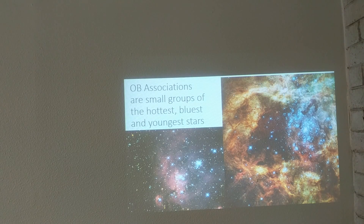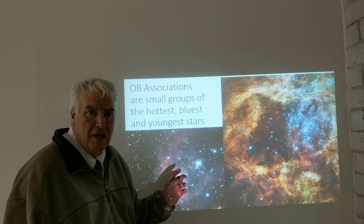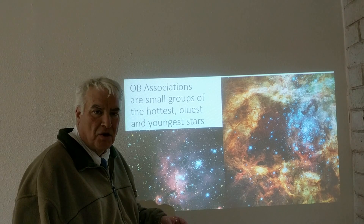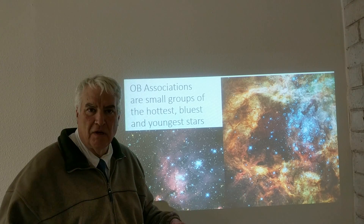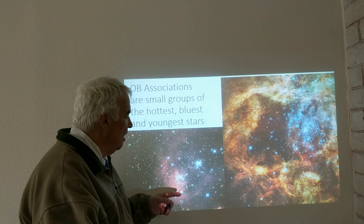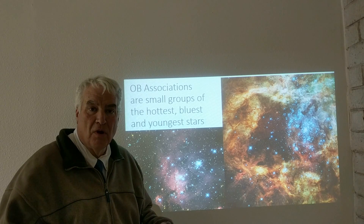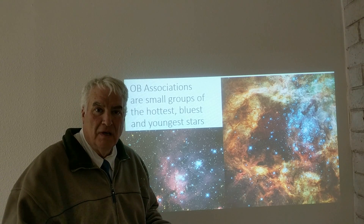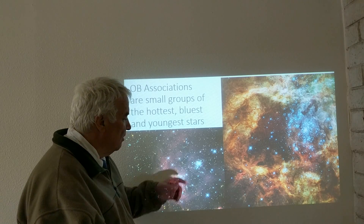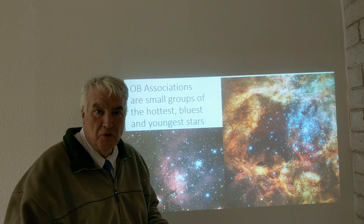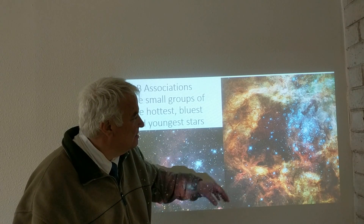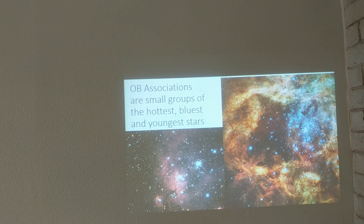OB associations are small groups of the hottest, bluest, and youngest stars, very often associated with gas clouds. These do not remain together in a cluster very long — they separate out, and in fact don't last very long because these stars have very short lives. Before they can become an old cluster, it becomes an extinct cluster, as the bright O and B type stars explode as supernovae. We can see gas clouds with lots of bright blue stars in these clusters, and they are young stars because they never live to old ages — more than a few million years.